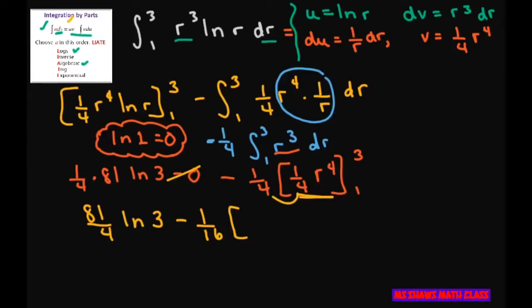Now as you plug in 3, the one-fourth is factored out. We're just looking at R to the fourth, so that's going to be 81 minus 1.